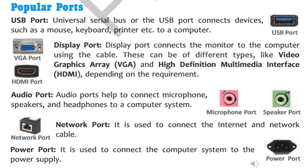Children, let me explain some popular ports again. The USB port — Universal Serial Bus — is used to connect keyboard, mouse, printer, etc. with your computer. Then we have the VGA port or HDMI port. These are used to connect your monitor with your computer. VGA stands for Video Graphics Array and HDMI stands for High Definition Multimedia Interface. Depending on the requirement, we use the appropriate port to connect our monitor.